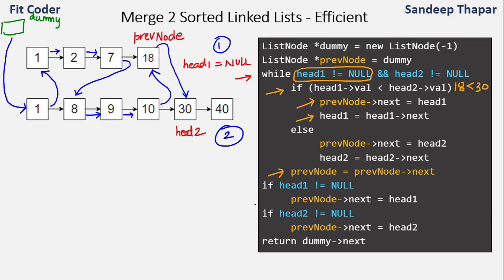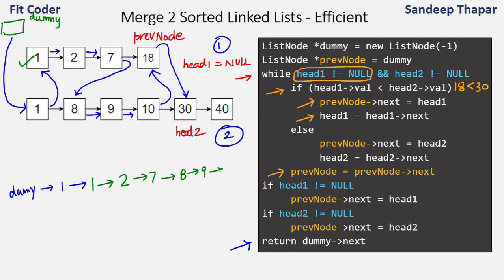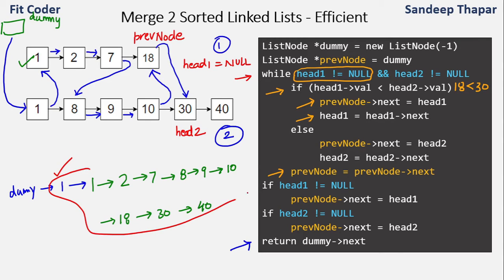At the end we return dummy next. Redrawing the final linked list: dummy → 1 → 1 → 2 → 7 → 8 → 9 → 10 → 18 → 30 → 40. These are all the blue links we created. We return dummy next, which is the first 1, so we have essentially returned the fully sorted merged linked list.